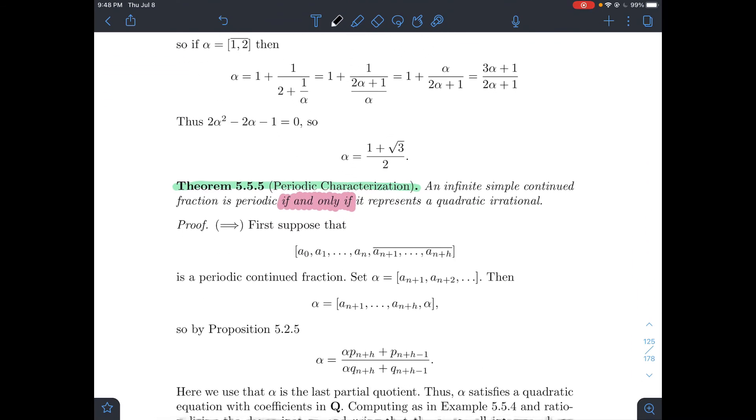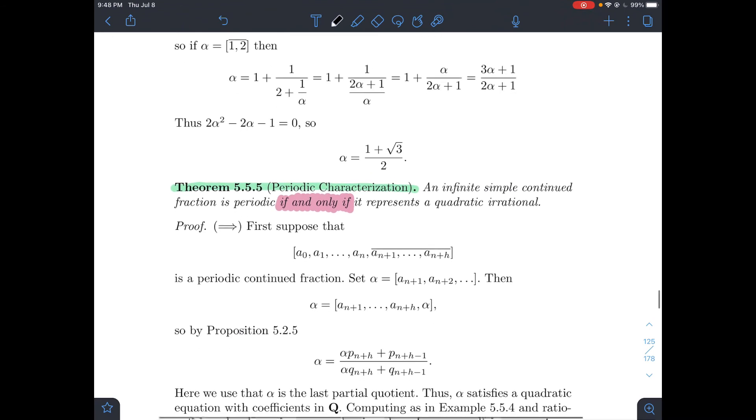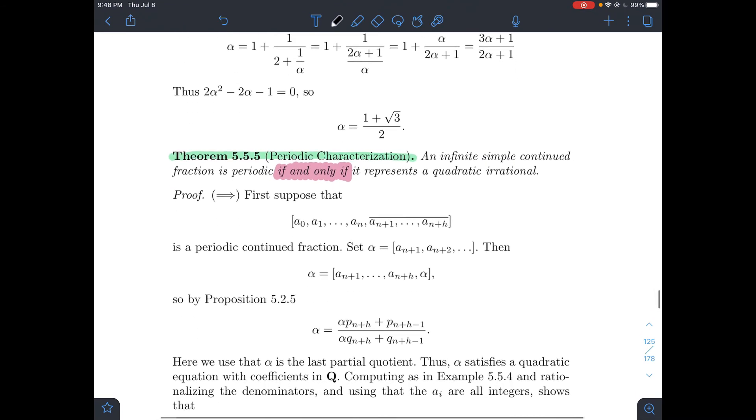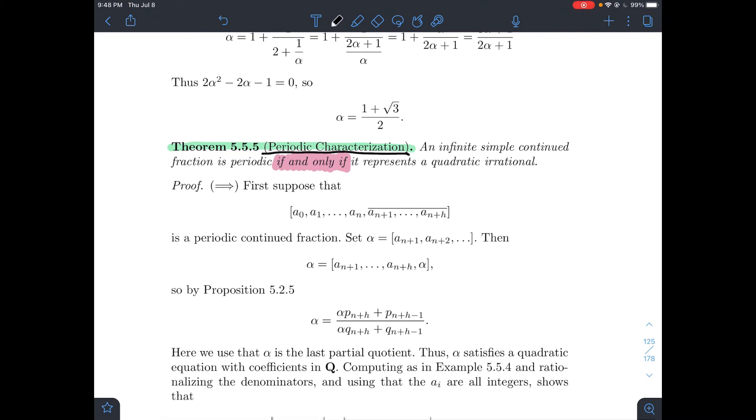That leads to maybe the last part of the video, the big results in this section with no proof. The proof is after this, so check out Stein's book and read through the proof. How do we characterize the periodic continued fractions? This is very important.